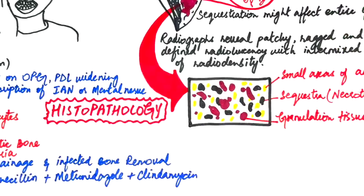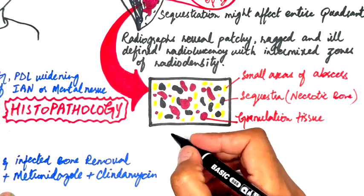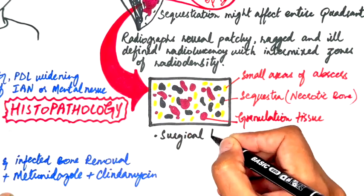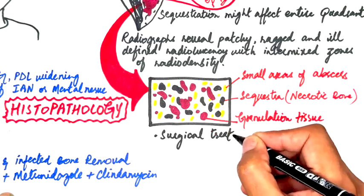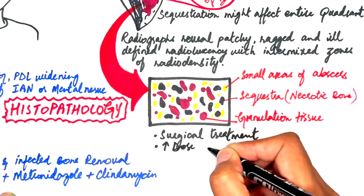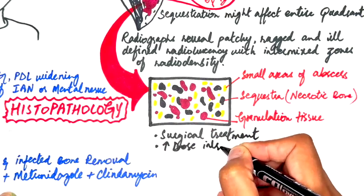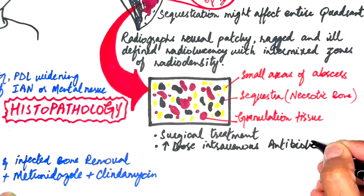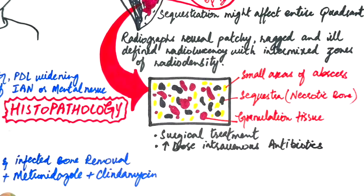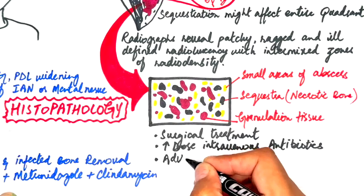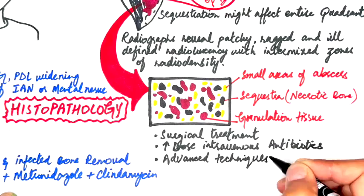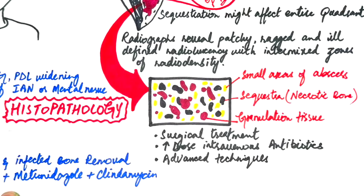Chronic suppurative osteomyelitis can be treated surgically and with advanced techniques. Removal of all infected tissue down to healthy bone is mandatory, combined with high-dose intravenous antibiotics. If the infection persists, additional treatments such as hyperbaric oxygen therapy or bone grafting may be required.